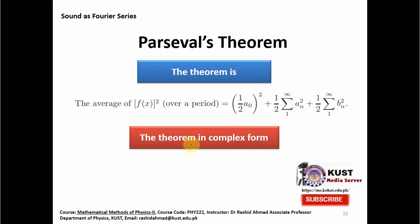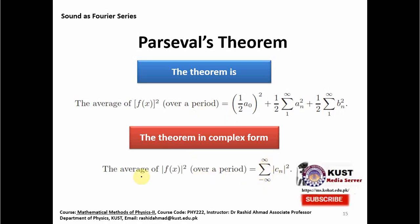This theorem can also be put into complex form. As you know, Fourier series have both a sine-cosine form and a complex exponential form. In the complex form, with cn summed from minus infinity to plus infinity, the average of f(x)² over a particular period equals the sum of |cn|².